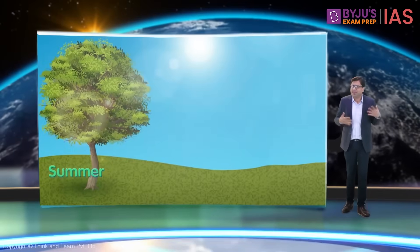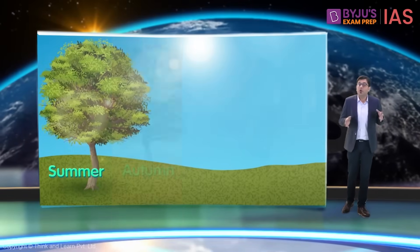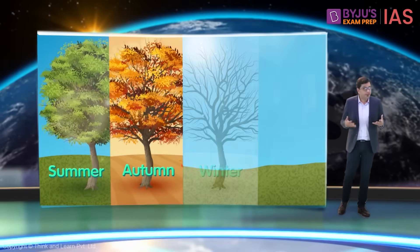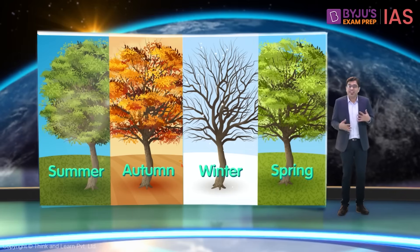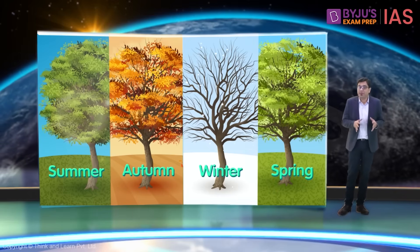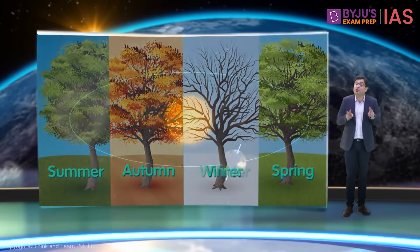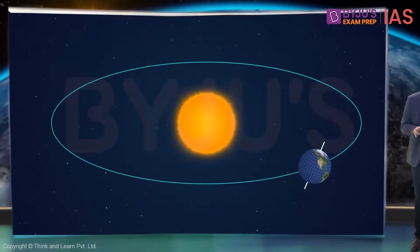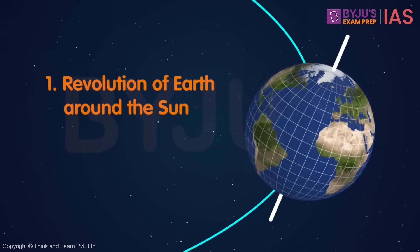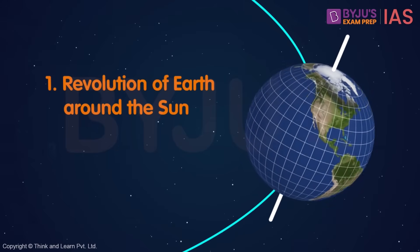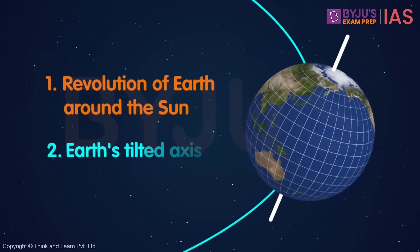Every year, we experience changes of seasons like summer, autumn, winter and spring. These changes can be explained with the help of two concepts: the revolution of the earth around the sun and its tilted axis.